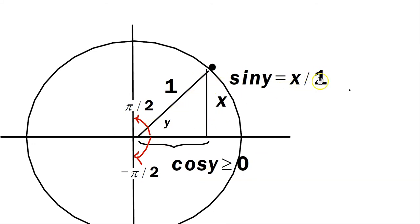And it's like that because it's x divided by 1. So if sine of y is x divided by 1, then this is the vertical leg and the hypotenuse is 1. And the angle is right here.